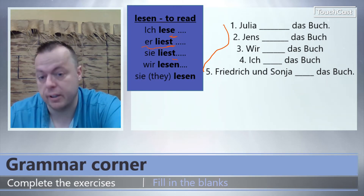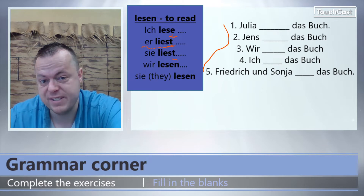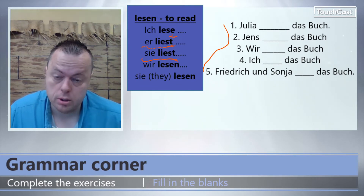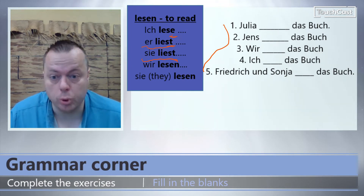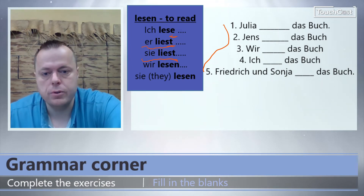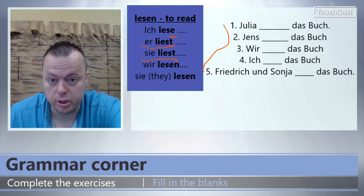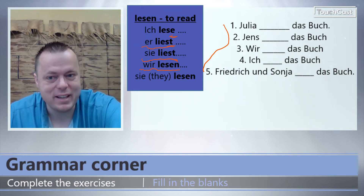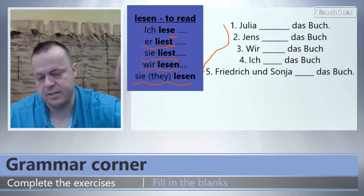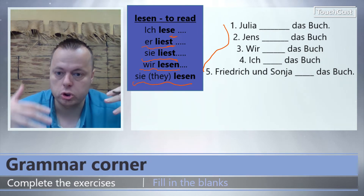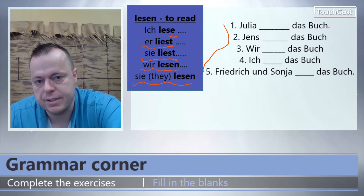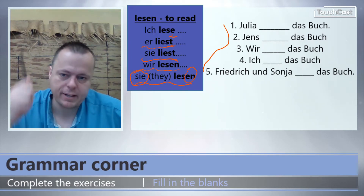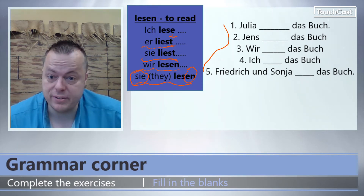Or if you say Julia - for Julia, a girl - sie liest. So you could say Julia liest das Buch. George liest das Buch. If I were to say we are going to read a book, I would say wir lesen. If I said that they were going to read the book, I might say sie lesen. Whenever you have multiple people, you're going to use sie lesen. So go ahead and do the activities.